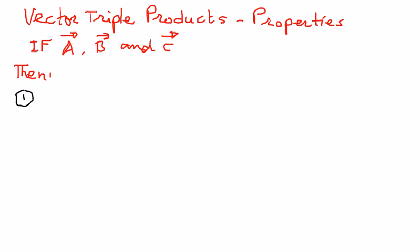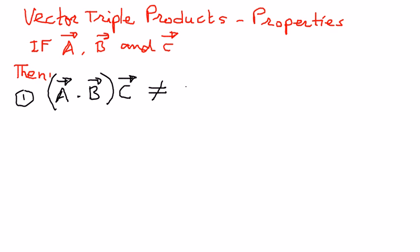Property one: vector A dot vector B, if you were to find the dot product of A and B and then distribute it to vector C, that is not the same as saying vector A times vector B dot vector C.